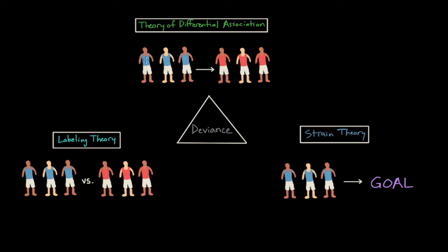One view of deviance from this perspective is a theory of differential association. Differential association states that deviance is a learned behavior that results from continued exposure to others who violate norms and laws. So in this situation, individuals who commit deviant behavior learn values and norms that are different from the dominant culture. You can think of this as monkey see, monkey do, but also the monkey believes this is acceptable behavior.